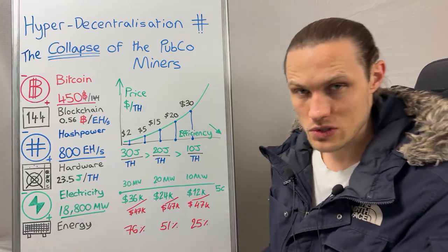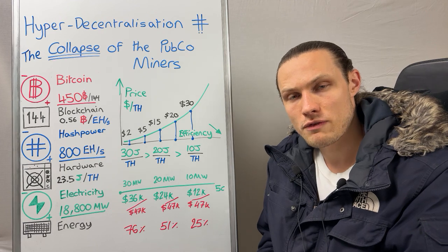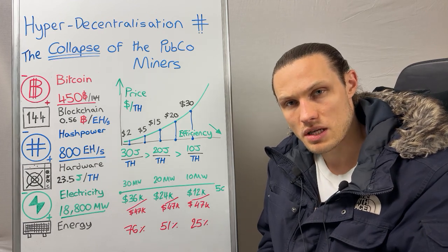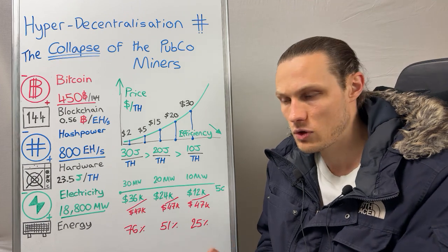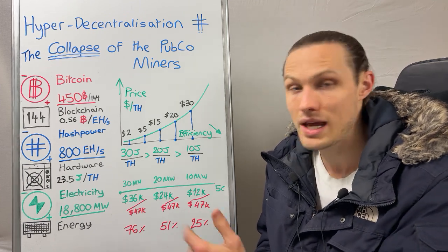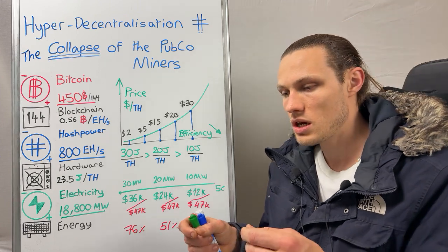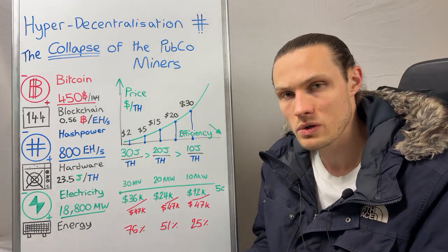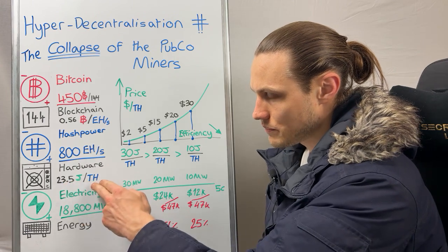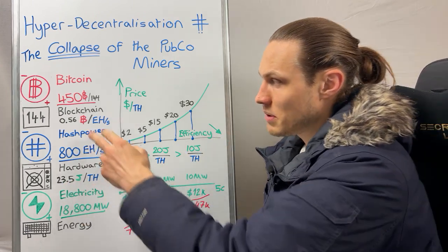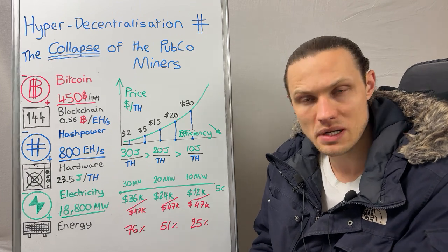The short term answer is that Bitcoin mining is a game of efficiency and energy availability — those are the two levers. You've got the uptime of the machines, the performance, the ability to repair, and the access to chips. The two key metrics are the efficiency of mining hardware and how many blocks of Bitcoin they're capturing relative to the network — what is the profitability of mining?